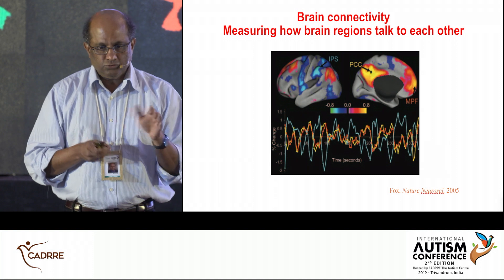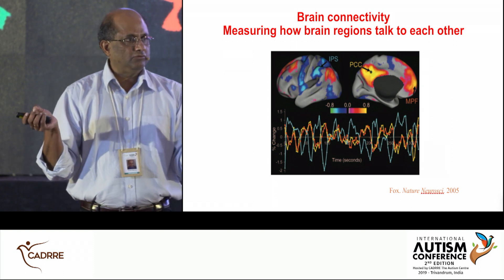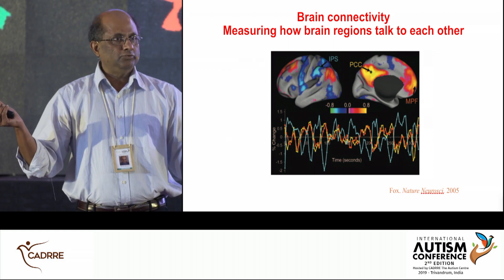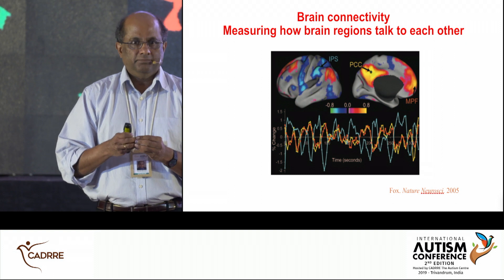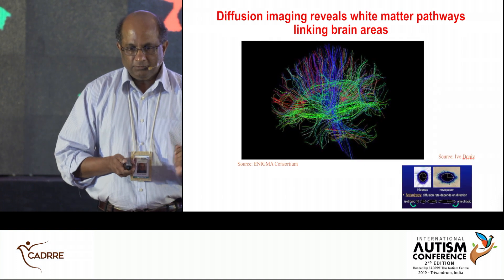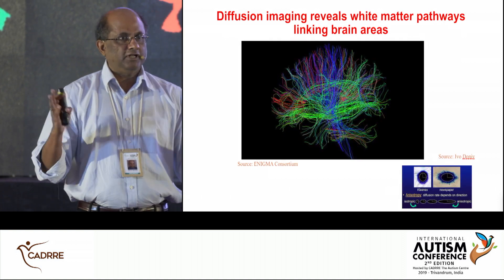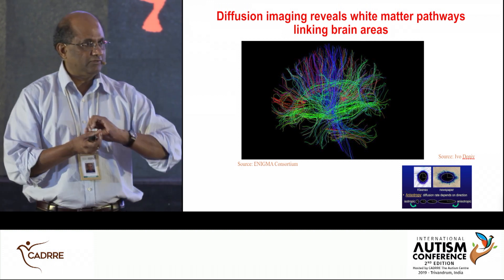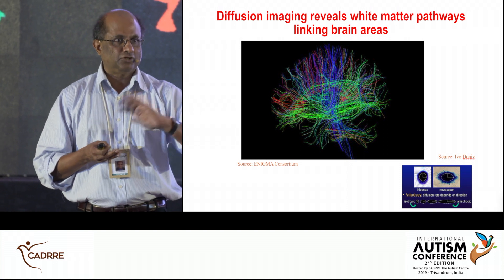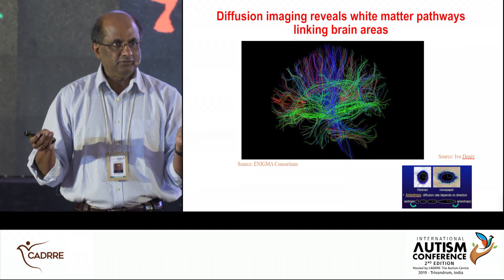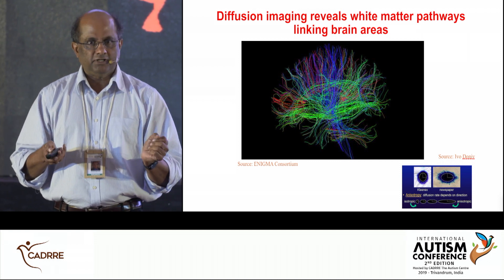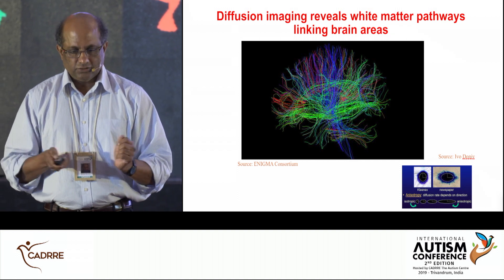One of the ways we study brain circuits using this technology is to see how different parts of the brain are linked — how they're talking to each other. You can think about this as air traffic from one city to another. This communication happens on a structural network — actual structural pathways — and on top of that you have traffic, which we call structural and functional connectivity: the actual physical links and the traffic that flows through them.